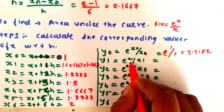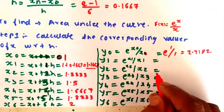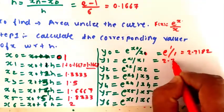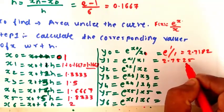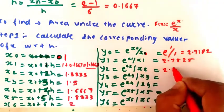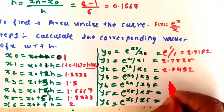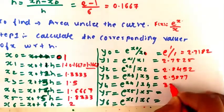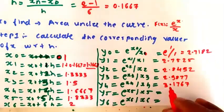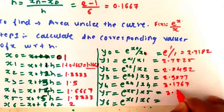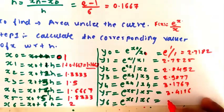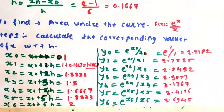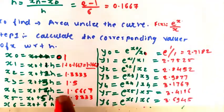y1 is e raised to x1 divided by x1, where x1 is 1.1667. Substituting this value, we get y1 equals 2.7525. Similarly, y2 is 2.8452, y3 equals 2.9877, y4 equals 3.1767, y5 equals 3.4116, and y6 equals 3.6945.